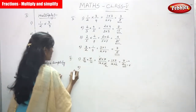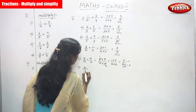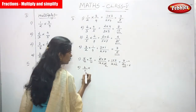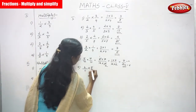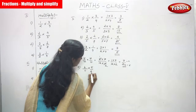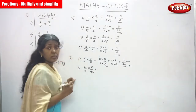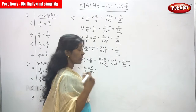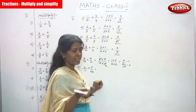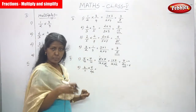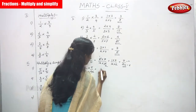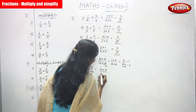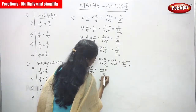Second sum: 6/11 multiplied by 5/42. 6/11 is a fraction and 5/42 is also a fraction — both are proper fractions. We write it as 6 × 5 divided by 11 × 42.